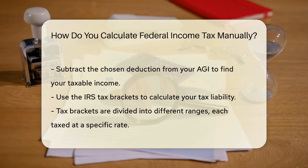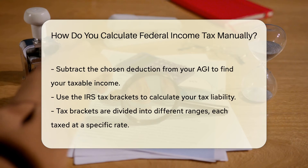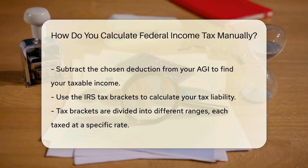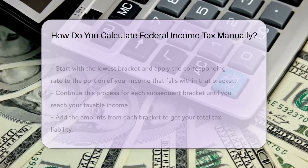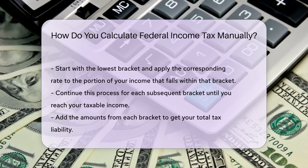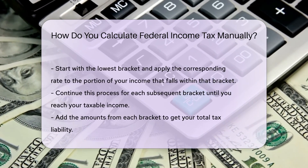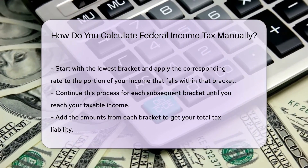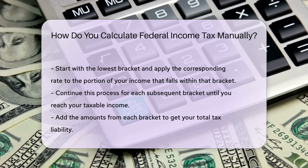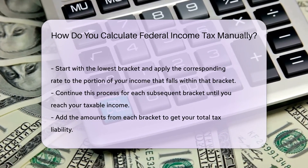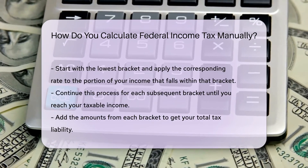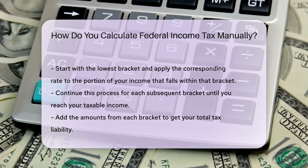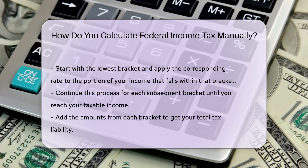Now use the IRS tax brackets to calculate your tax liability. Tax brackets are divided into different ranges, each taxed at a specific rate. Start with the lowest bracket and apply the corresponding rate to the portion of your income that falls within that bracket. Continue this process for each subsequent bracket until you reach your taxable income. Add the amounts from each bracket to get your total tax liability.